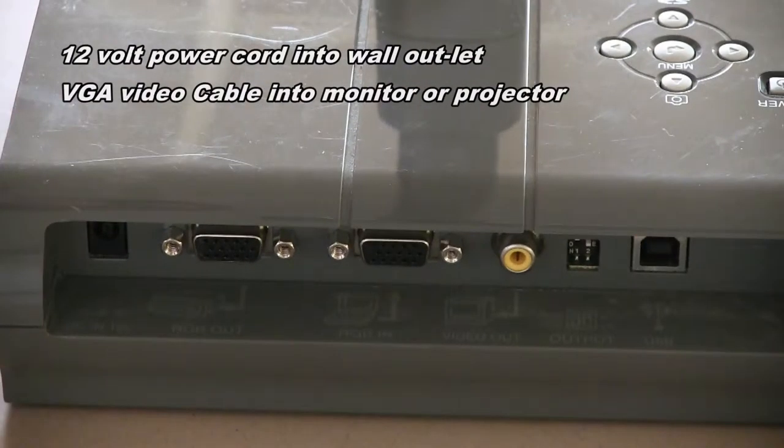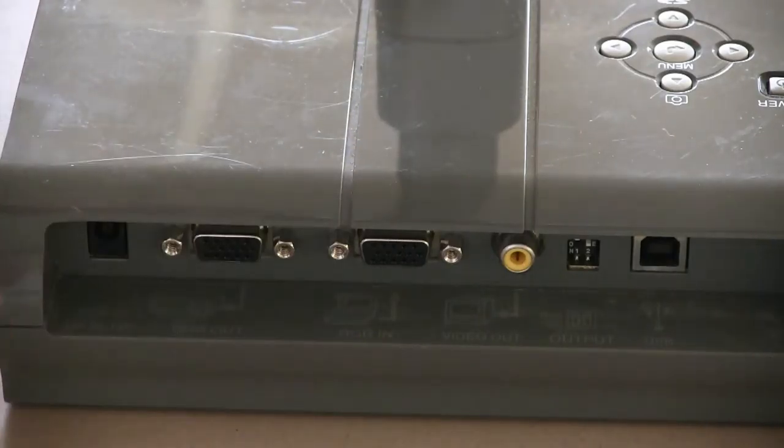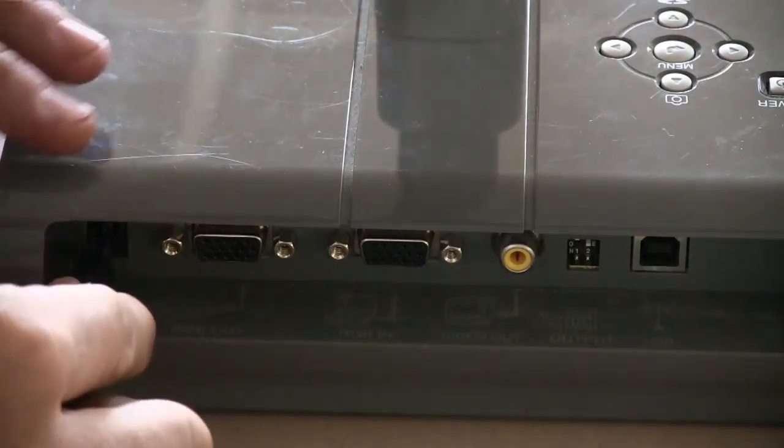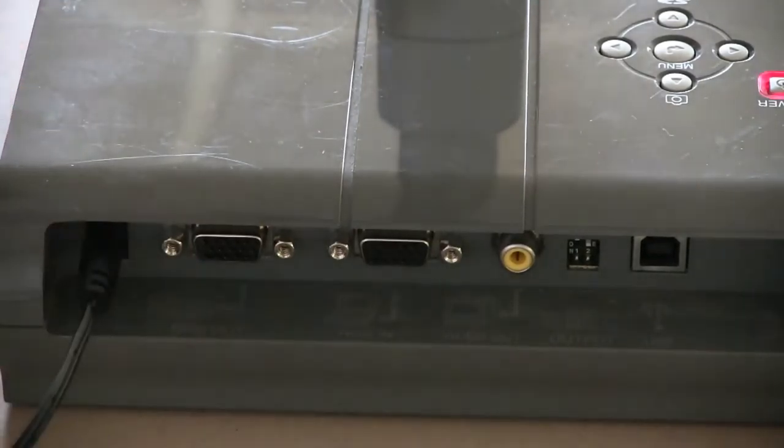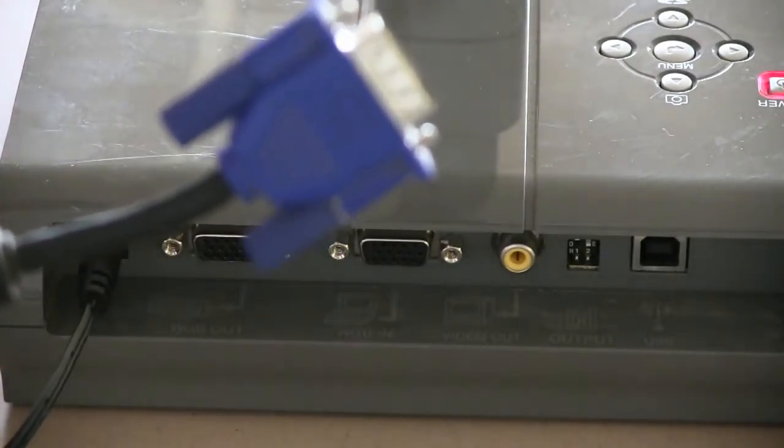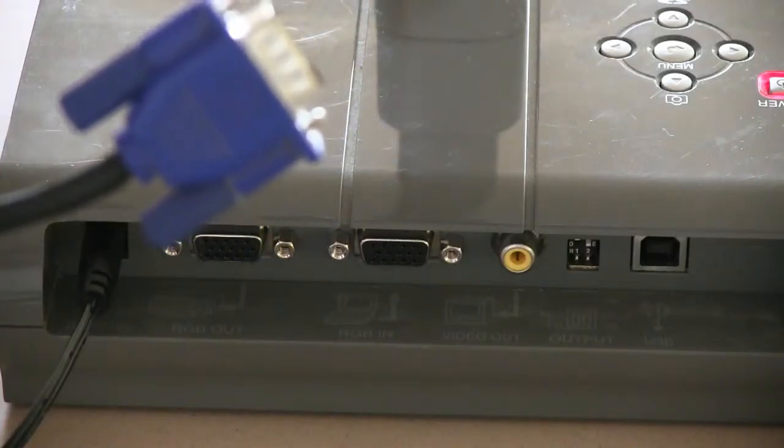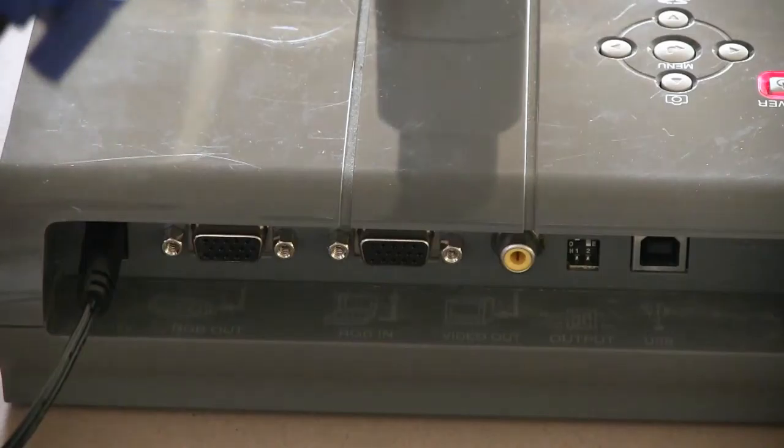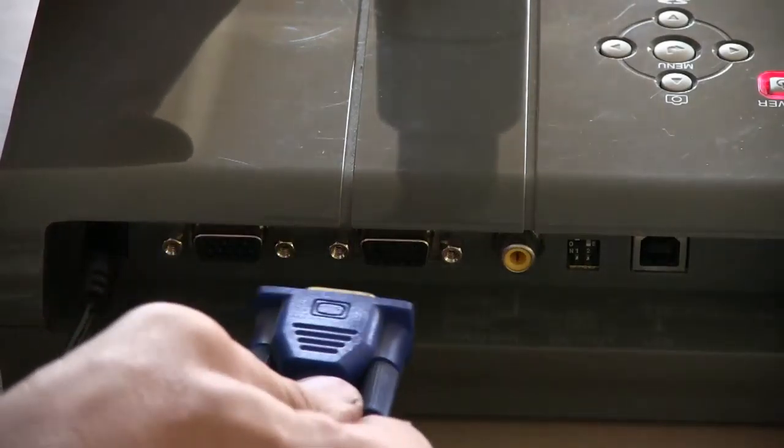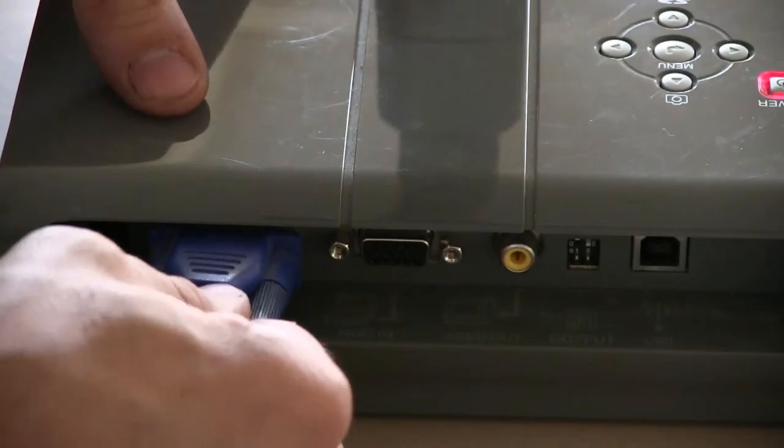To set up the document camera, you first need to plug in the 12-volt power cord into the camera, followed by the video cable that's either hooked up to the computer, individual computer monitor, or a projector into the video out port.